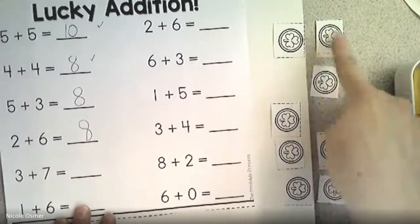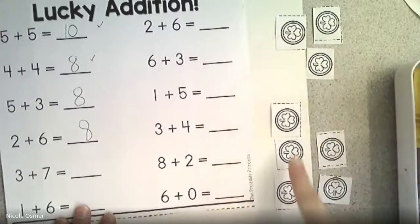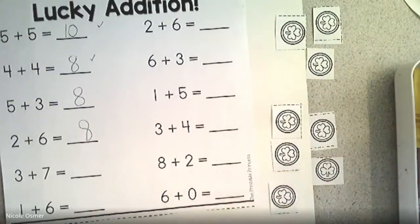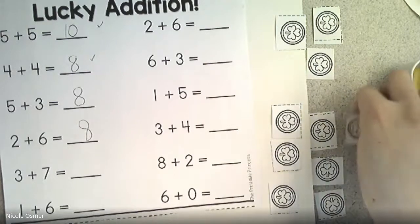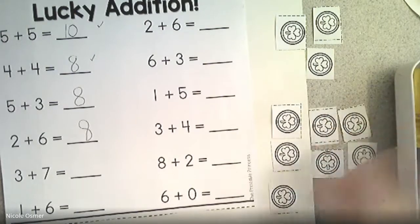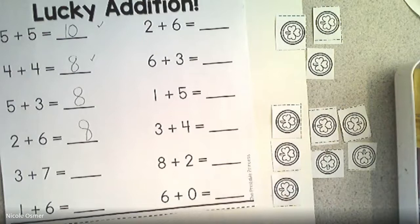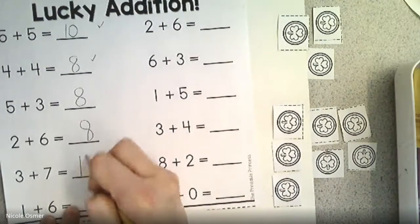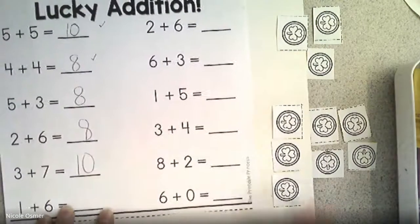Three plus seven. One, two, three, plus one, two, three, four, five, six, seven. How many all together? That's right, ten.